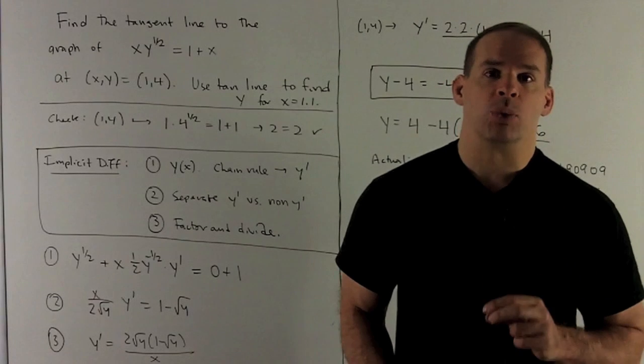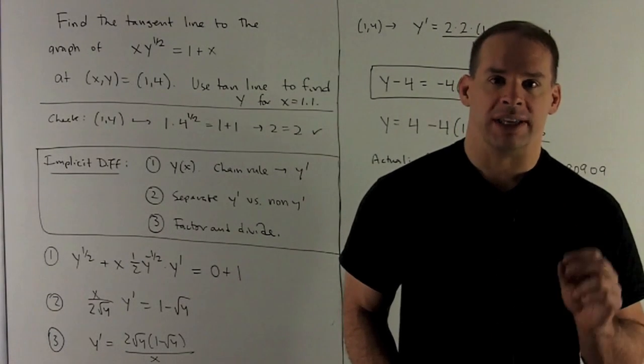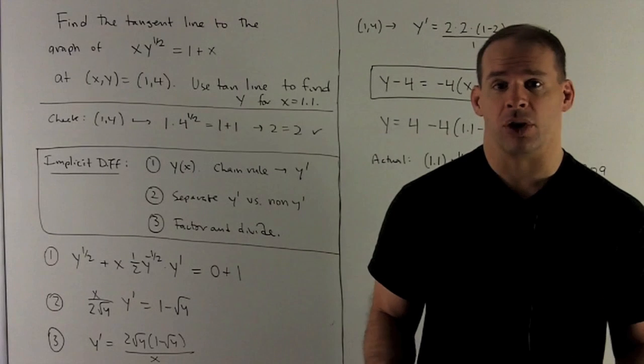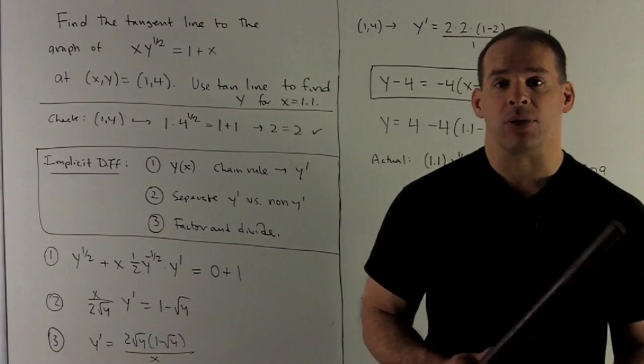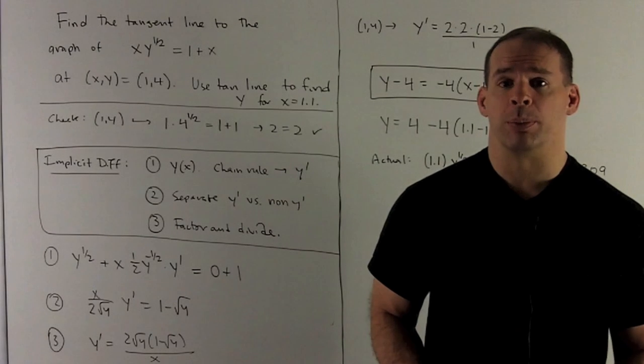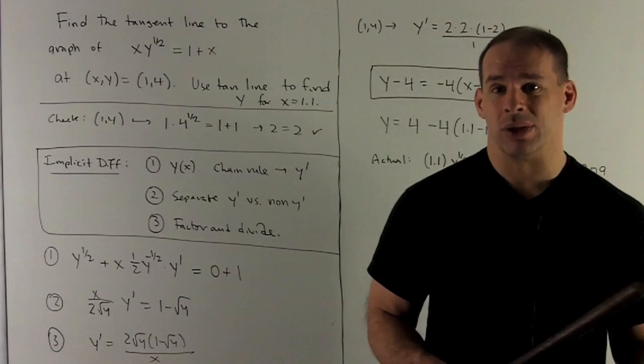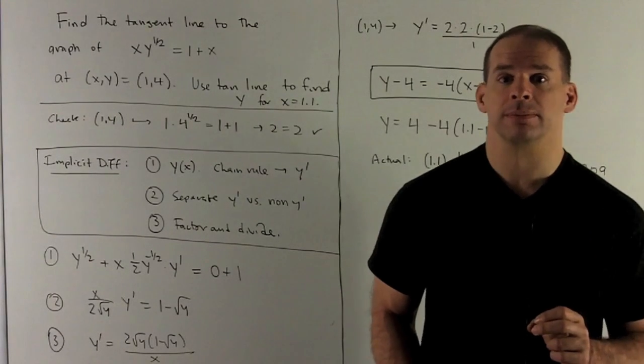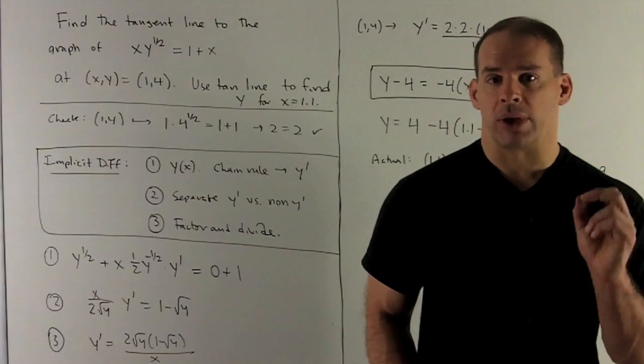Then we have to worry about algebra to get y' by itself. The way we do that is, once you've taken all your derivatives, separate out the y' and the non-y' stuff. For the y' stuff, you'll pull a y' out, then just divide by what's left over on both sides. Then you'll have y' isolated.